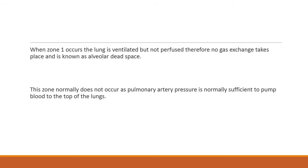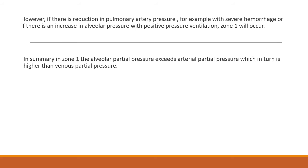When Zone 1 occurs, the lung is ventilated but it is not perfused. Therefore, gas exchange cannot occur, thereby resulting in alveolar dead space. This zone normally does not occur because the pressure in the pulmonary artery is sufficient to pump blood to the top of the lungs, overcoming the alveolar pressure. But if there is any reduction in pulmonary artery pressure or any increase in alveolar pressure, then Zone 1 can happen.